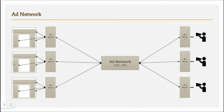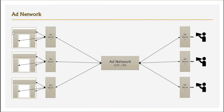Once the criteria is matched, the ad network will put the ad on the particular slot. The ad network aggregates the supply side and the demand side and acts as an intermediary between the two. The ad network charges on two terms: one is cost per impression — based on how many people a particular ad has been shown to, they charge the advertiser, pay the website owner, and keep a profit in between. There is also a cost per click model — if a user clicks on a particular ad, a charge is applied to the advertiser, payment goes to the website owner, and the ad network keeps a profit.